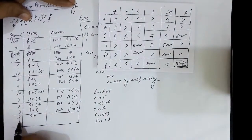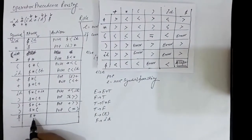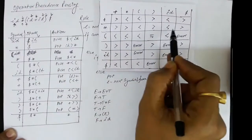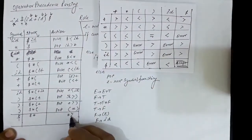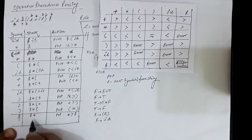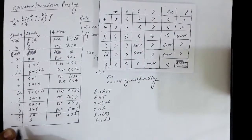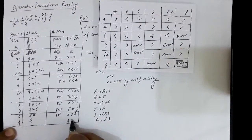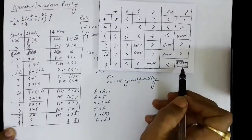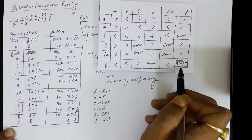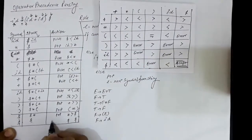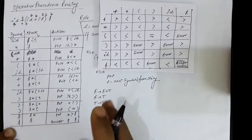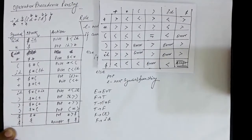We check the precedence of multiplication sign against dollar — multiplication has higher precedence than dollar, so we pop the stack. We now remain with just dollar. We then check the precedence of dollar and dollar — dollar and dollar is 'accept', so we accept this string.